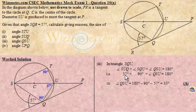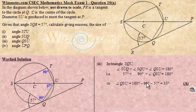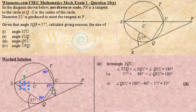Putting the values in: 57 degrees plus 90 degrees plus angle QSU equals 180 degrees. Transposing, angle QSU equals 180 minus 90 minus 57 degrees. This reduces to 33 degrees. Therefore this angle is 33 degrees, and we can show that in the diagram.